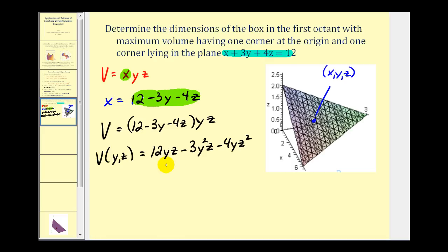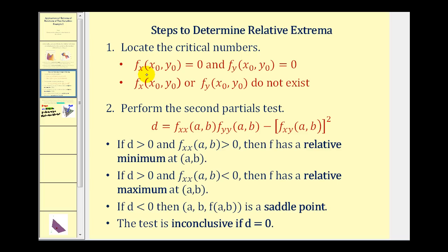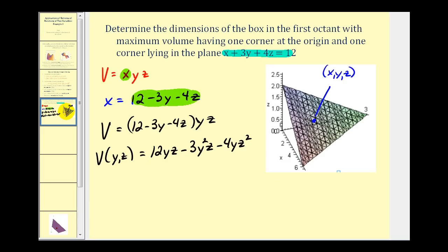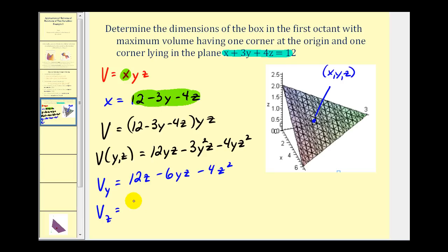To find the critical points for this function, we determine where both first partial derivatives are equal to zero or undefined. Then we'll perform the second partials test to determine if we have a relative max, min, or neither. The partial derivative of V with respect to y is 12z minus 6yz minus 4z², and the partial derivative of V with respect to z is 12y minus 3y² minus 8yz. Our goal is to find values of y and z that make both equations equal to zero simultaneously.